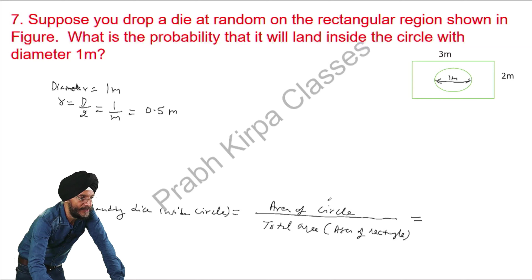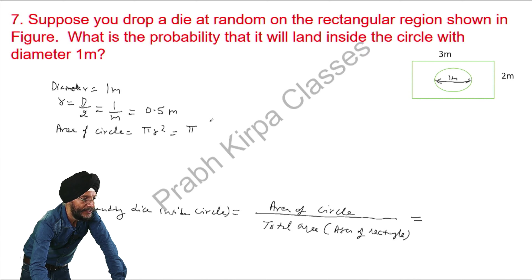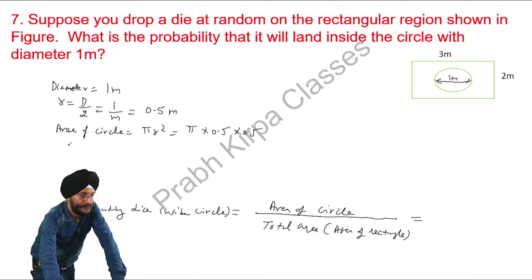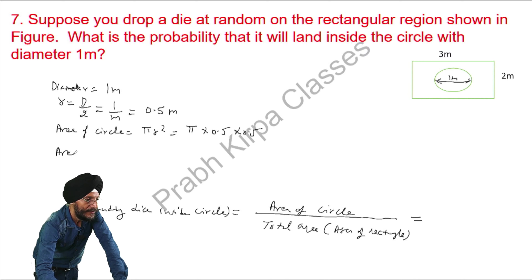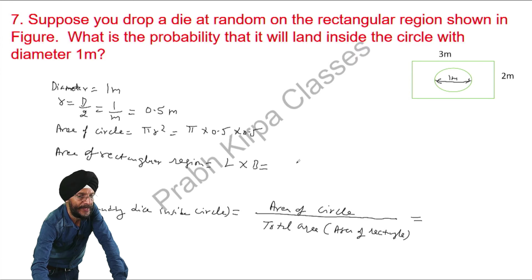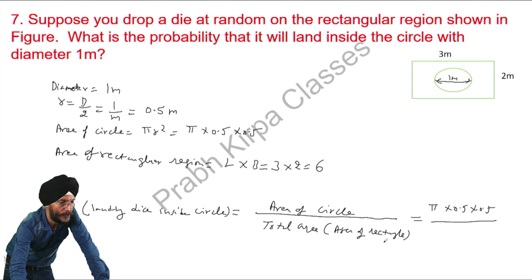To find the area of the circle, the formula is pi r squared. Pi r squared here gives pi times 0.5 times 0.5. The area of the rectangular region is length times breadth, which is 3 times 2, equal to 6. So we write: area of circle — pi times 0.5 times 0.5 — divided by total area, which is 6.